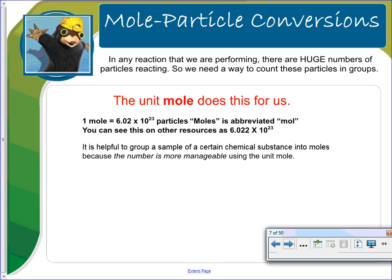And any reaction that we are performing, there are huge numbers of particles reacted, so we need a way to count these. And that's where the mole comes in. We'll use 6.02 times 10 to the 23rd or you can see it on your other resources at 6.022 times 10 to the 23rd. It wouldn't matter which one of these you use because they're only off by 2,000. So either one of those are acceptable. And so since the substances are so small, it's helpful to group them in numbers that are more manageable and that's where the unit mole comes in.